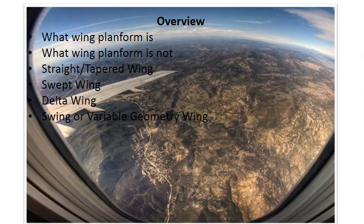Here's an overview of what we're going to be discussing. First, we're going to talk about what wing planform is, and we're actually going to take a look at what it is not, so that we have a clear idea of what we're discussing and understand the portion of the wing we're talking about. Then we're going to go into the different wing types — straight, tapered, and elliptical wings, because it's a type of straight wing.